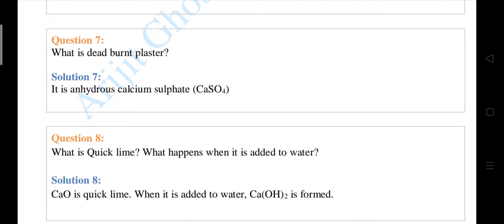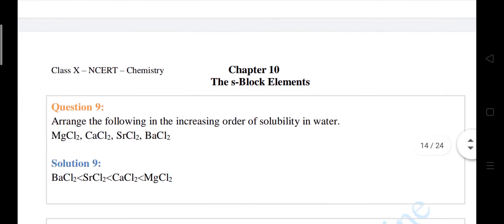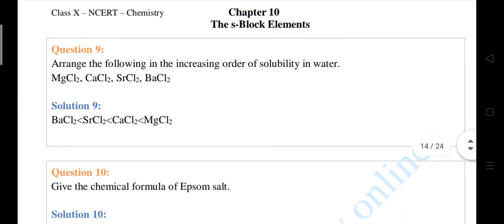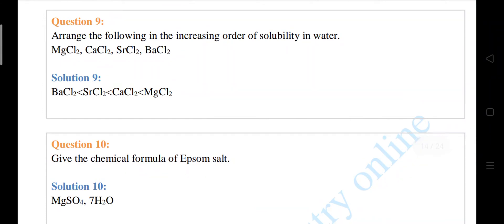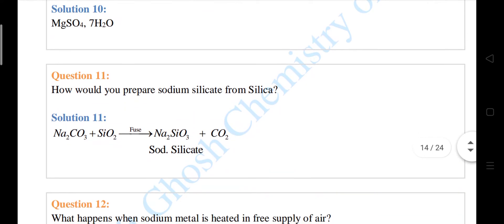Dead-burned plaster. Calcium sulphate is called dead-burned plaster. Quickly, I'm going to know. Now, this arrange the following type of questions. This is another important type of question. Number 9 is very important for you.